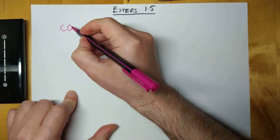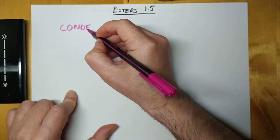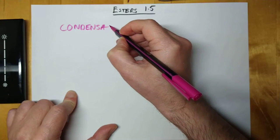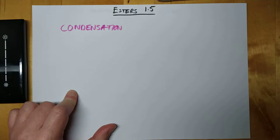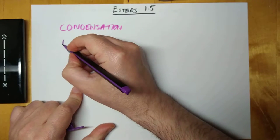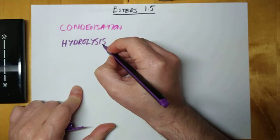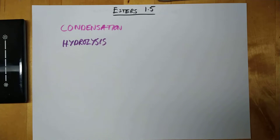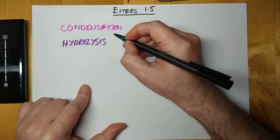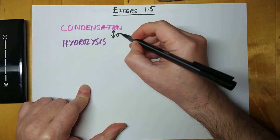Let's have a look at these two terms here. Condensation and hydrolysis. Now, these two are related to each other in that they are effectively opposite sides of a coin. They are the precise opposite chemical reaction to each other.